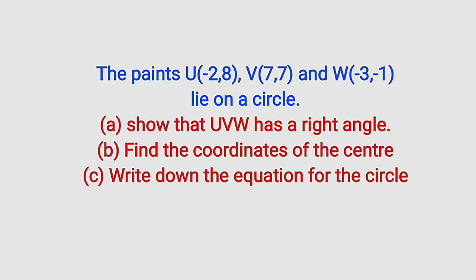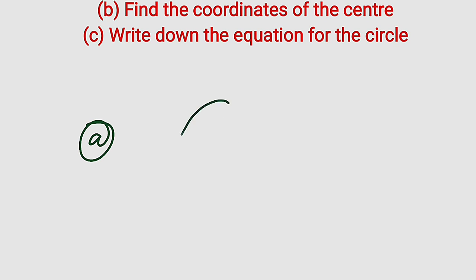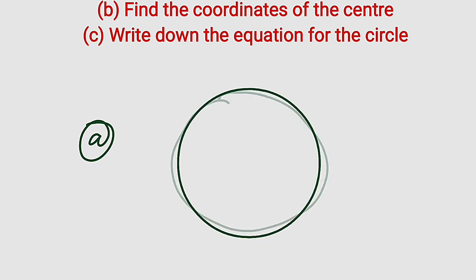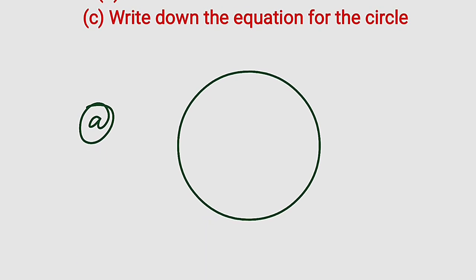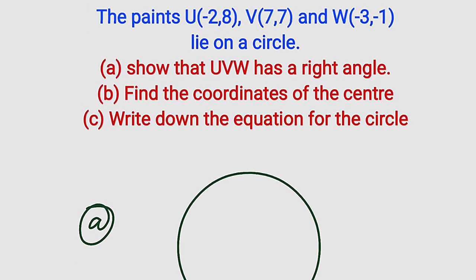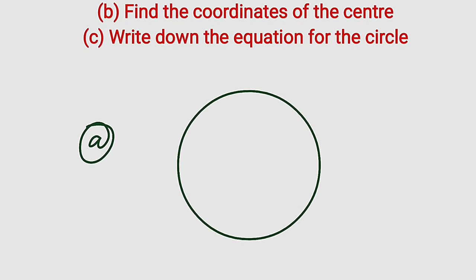Alright, let's get started. Part A: suppose we have a circle like this. According to the question, there are three points U, V, and W on this circle. Part A asks us to show that UVW has a right angle, meaning UVW is a triangle. The only triangle that has 90 degrees is a right angle triangle. We know from the circle theorem that it is only the diameter that can sustain an angle of 90 degrees to the circumference, because this triangle is an inscribed triangle on a circle.